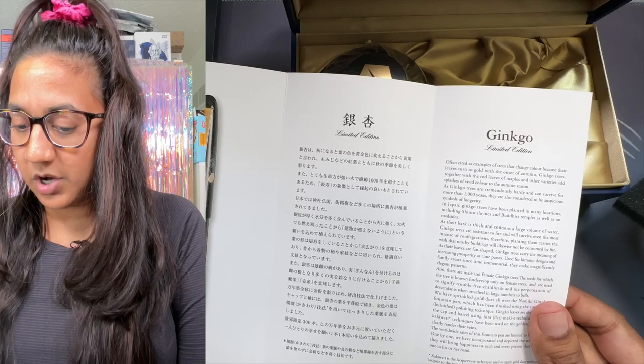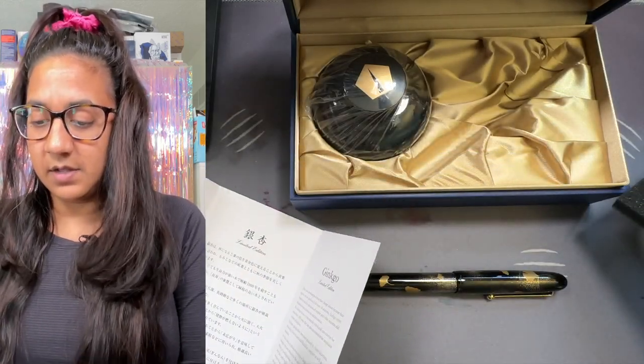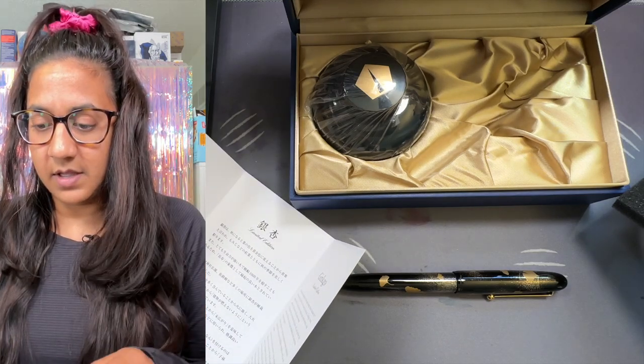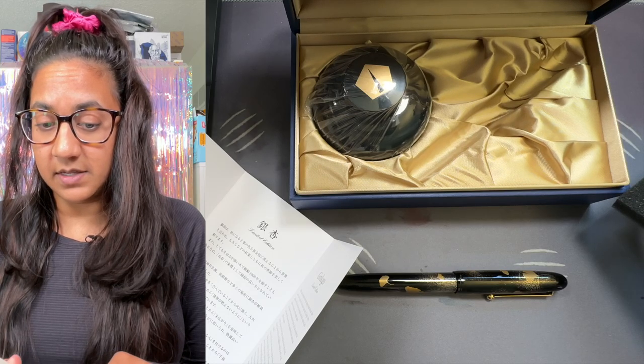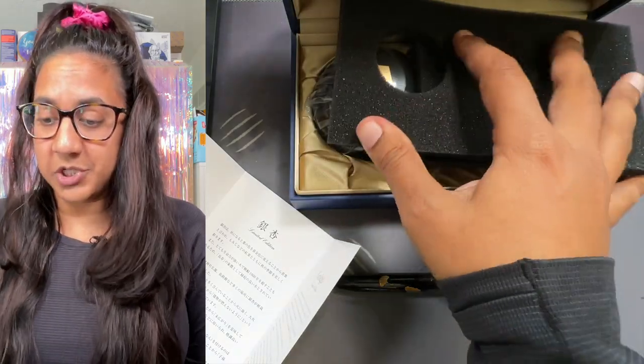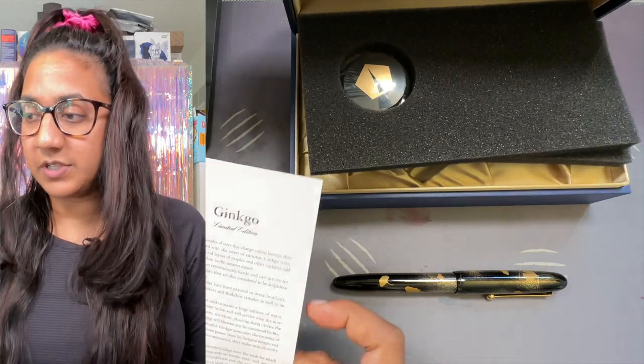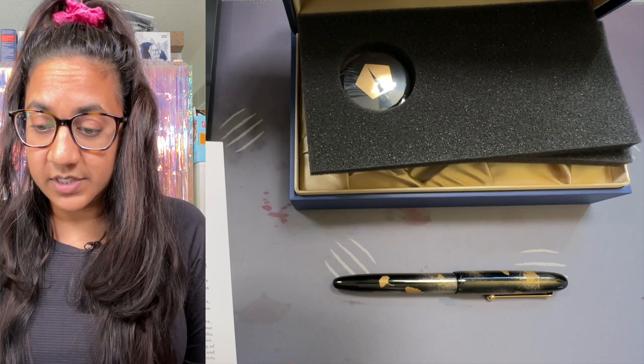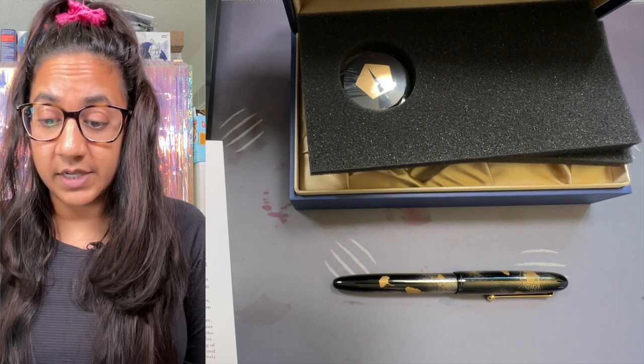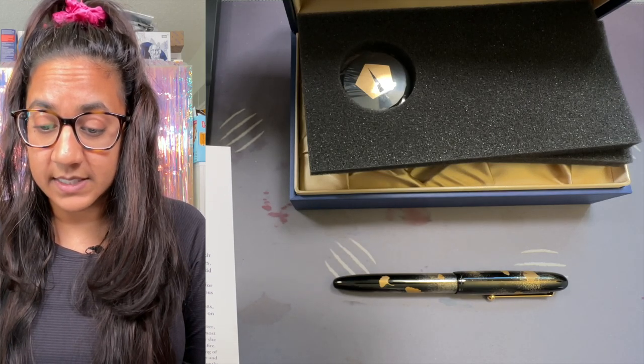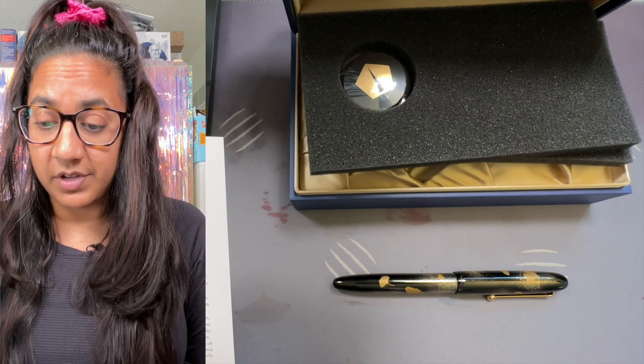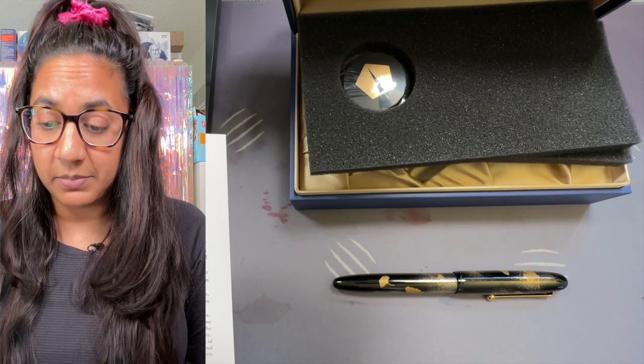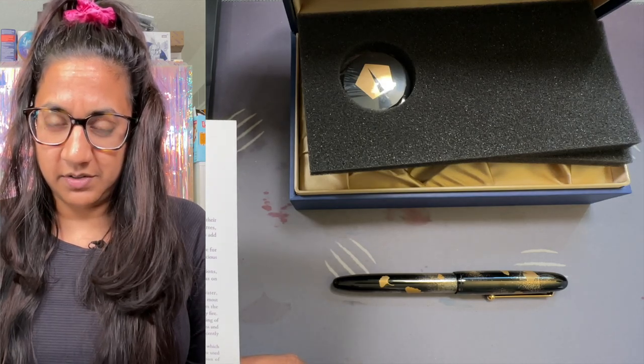Here is the Ginkgo paperwork information. It has a serial number. Ginkgo limited edition, there are 300 that have been produced. Often cited as examples of trees that change color because their leaves turn to gold with the onset of autumn. Ginkgo trees are tremendously hardy and can survive for more than a thousand years. They are also considered to be auspicious symbols of longevity in Japan. Ginkgo trees have been planted in many locations including Shinto shrines and Buddhist temples.